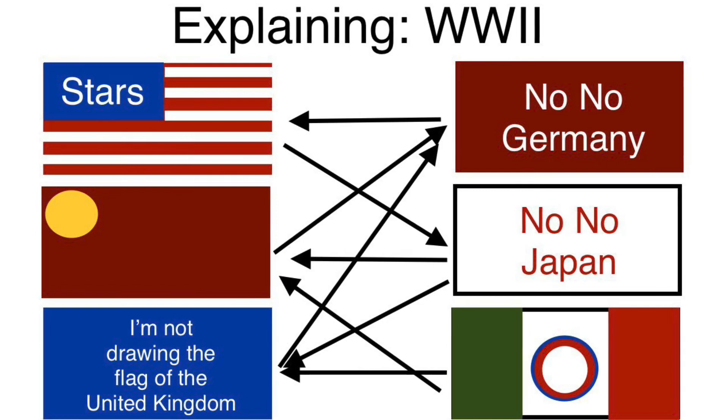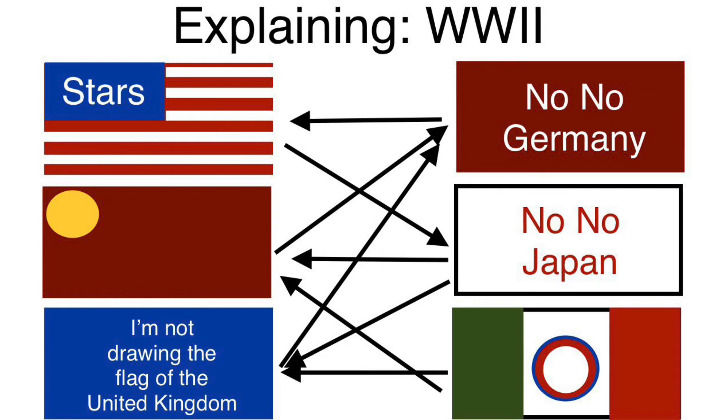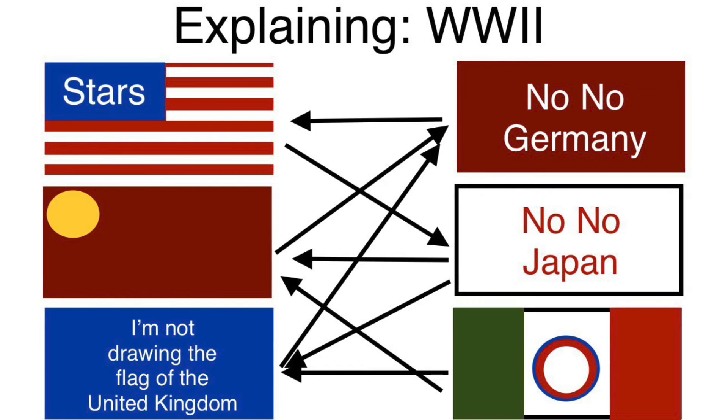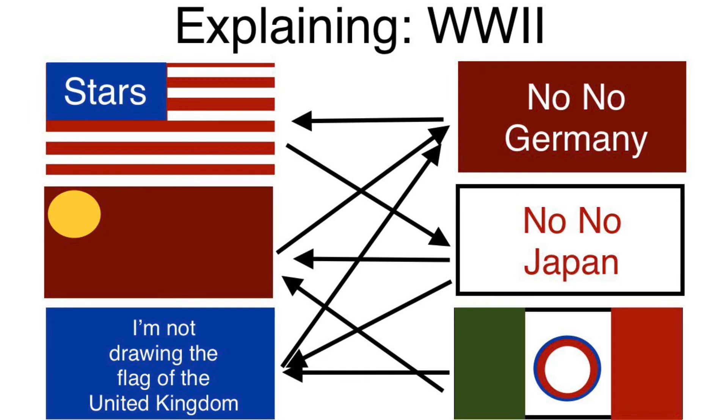On July 25th, 1943, the Italians would vote Benito Mussolini out of power, and in October of that same year, they would declare war on their old ally, Germany, joining the Allies.